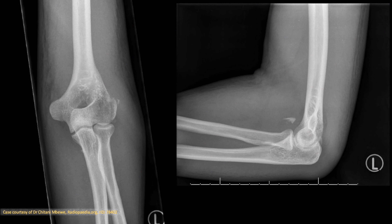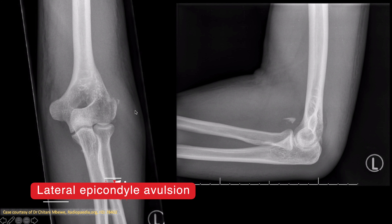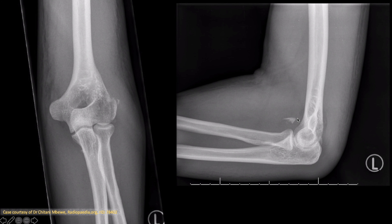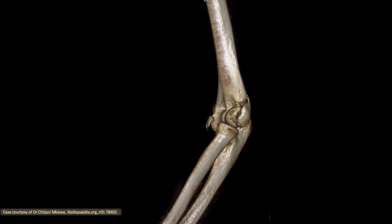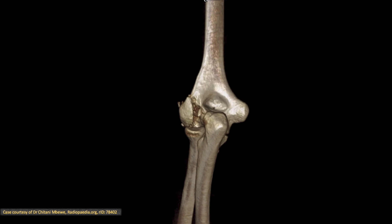This is a patient who fell on an outstretched hand. The anterior humeral and radiocapitellar lines are normal and no elbow dislocation can be seen. An avulsion fracture fragment is seen projecting superior to the radial head on the lateral view, closely related to the lateral epicondyle on the AP view. Elevated anterior and posterior fat pads are present. This is a 3D reconstruction of the injury.